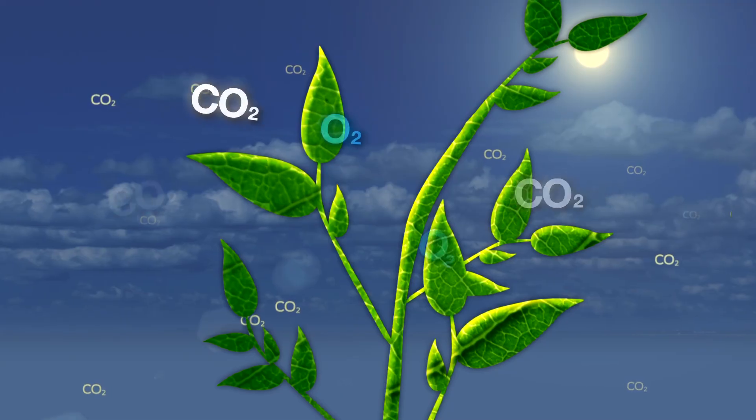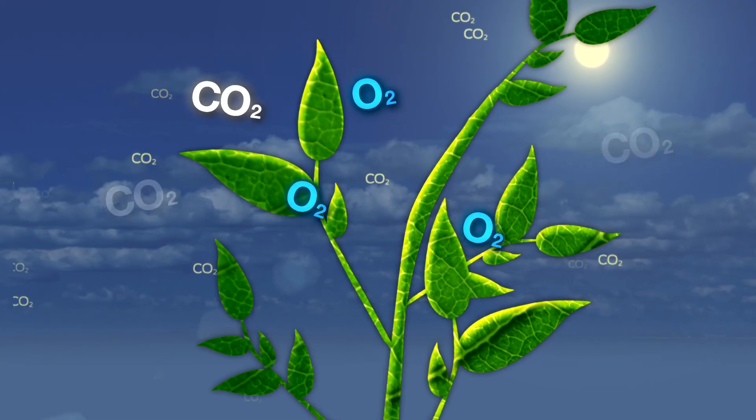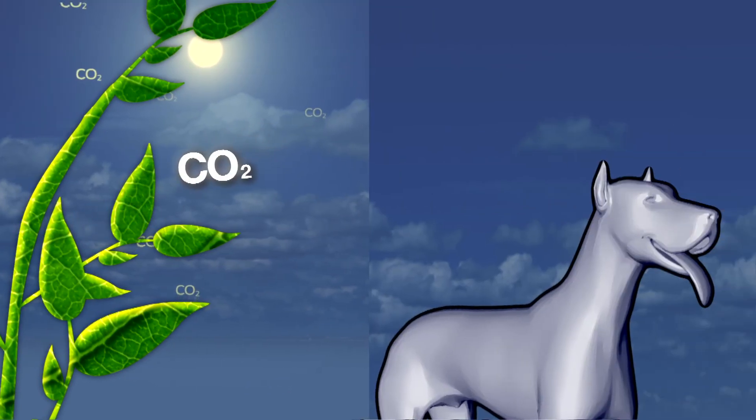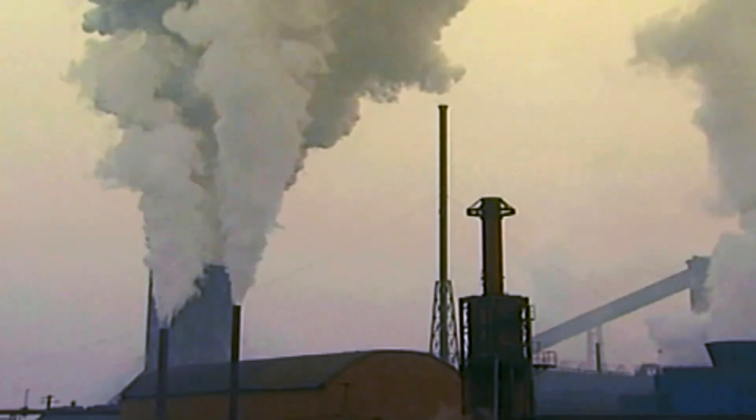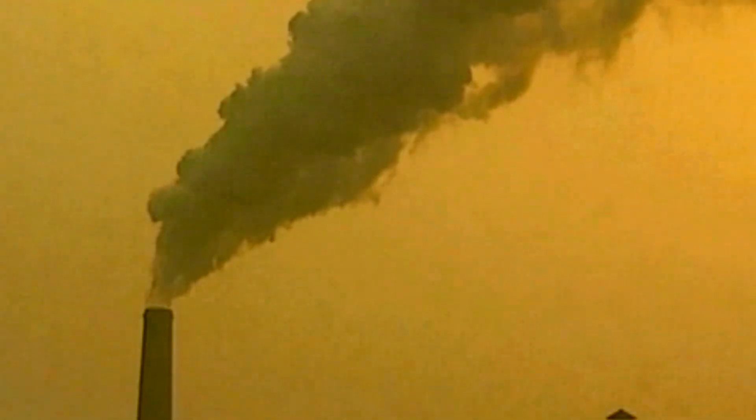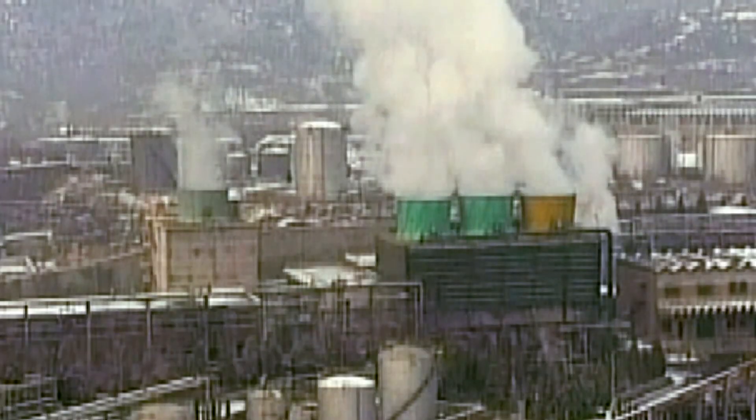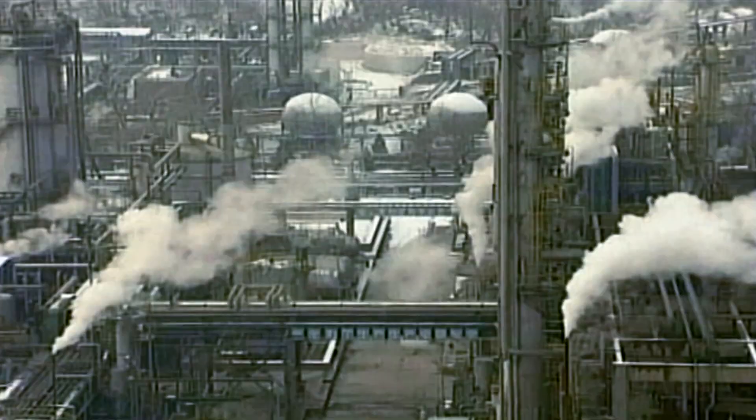Plants take in CO2, along with sunlight and water, and give out oxygen. Animals and humans take in oxygen and give out CO2. And then there's this: the burning of fossil fuels in power plants, automobiles, and factories.